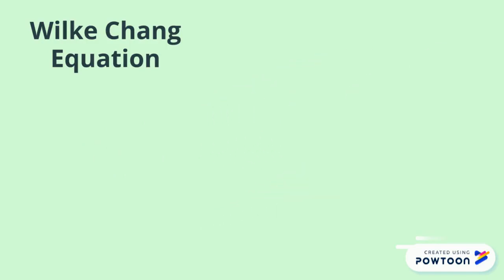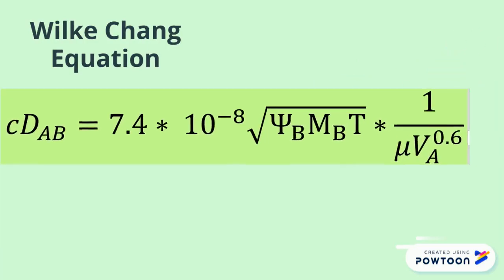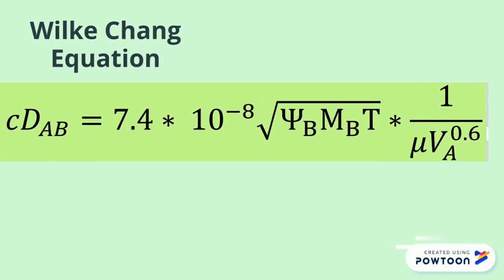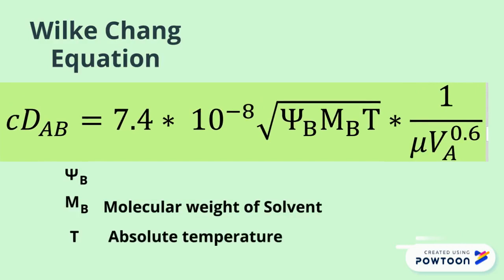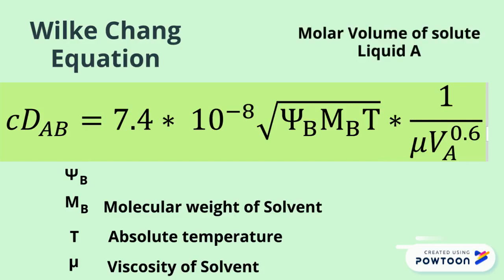The Wilk-Chang equation gives diffusivity of small concentrations of solute A in solvent B as follows: DAB equals 7.4 into 10 to the power minus 8 into under root of psi B into the molecular weight of B into absolute temperature divided by viscosity of solvent B into molar volume of solvent A raised to 0.6.